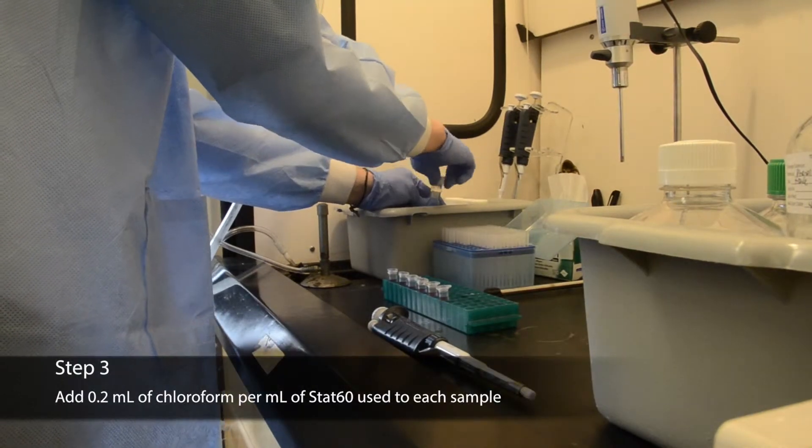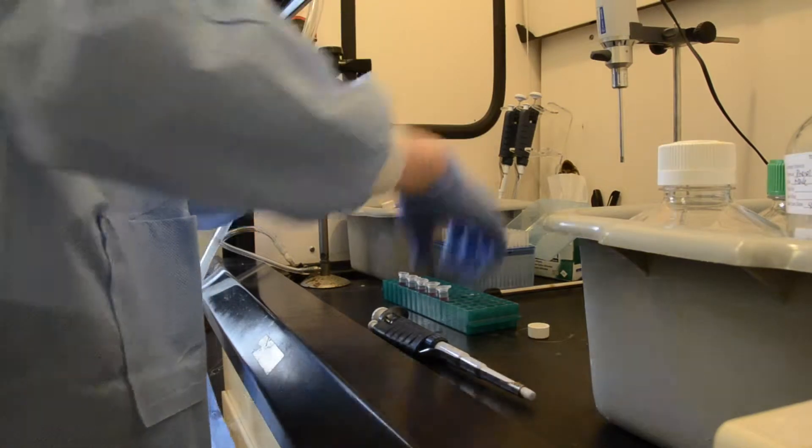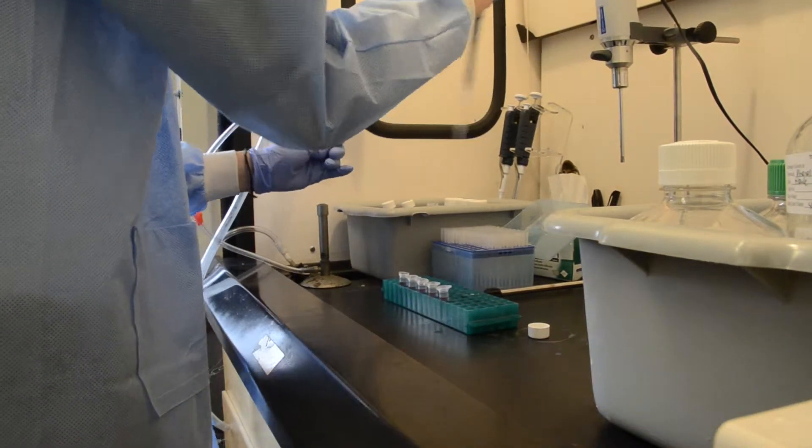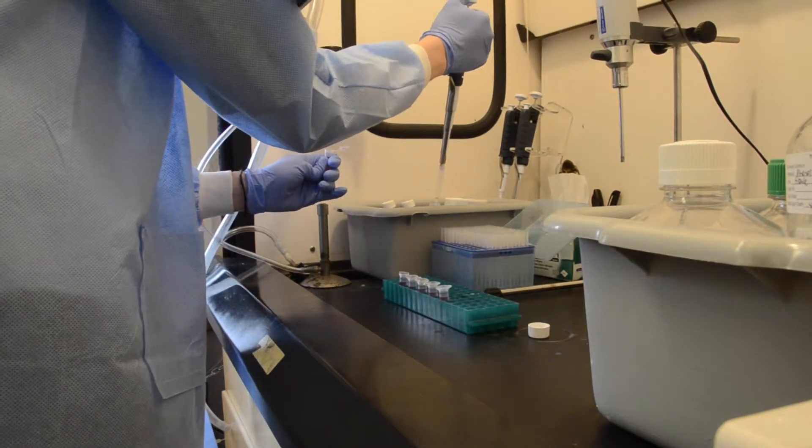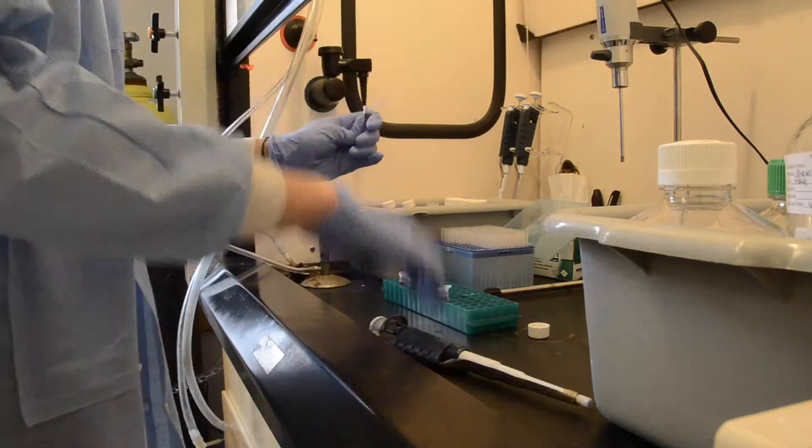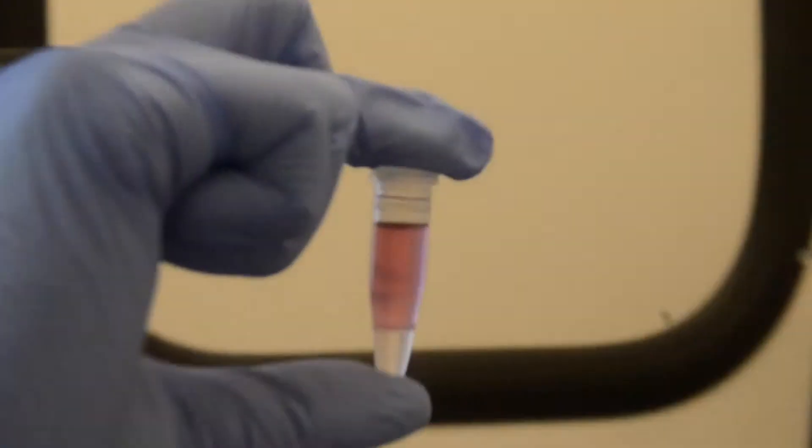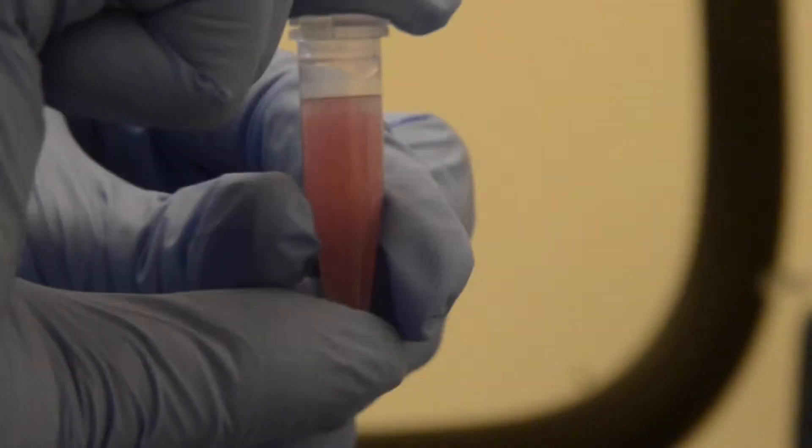Following the incubation, add 0.2 milliliters chloroform per milliliter of STAT60 used. Shake vigorously for 15 seconds and keep the sample at room temperature for five to six minutes. Chloroform is considered a hazardous chemical, so use caution when handling it and always work in the hood. The addition of the chloroform to the homogenate separates it into two phases, the aqueous phase and the organic phase.